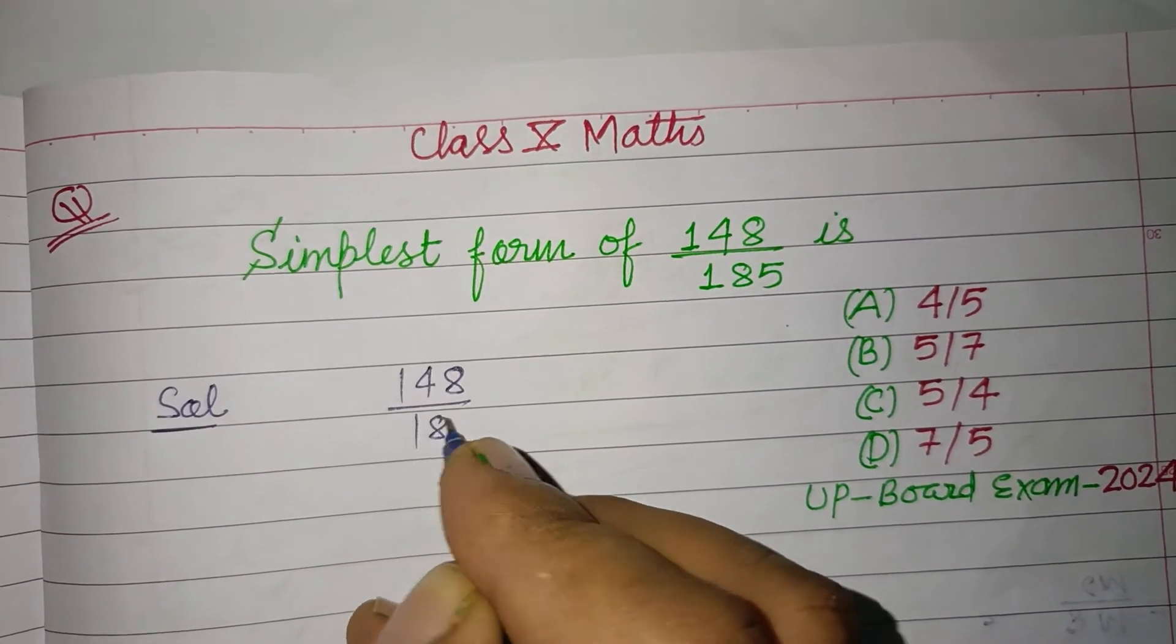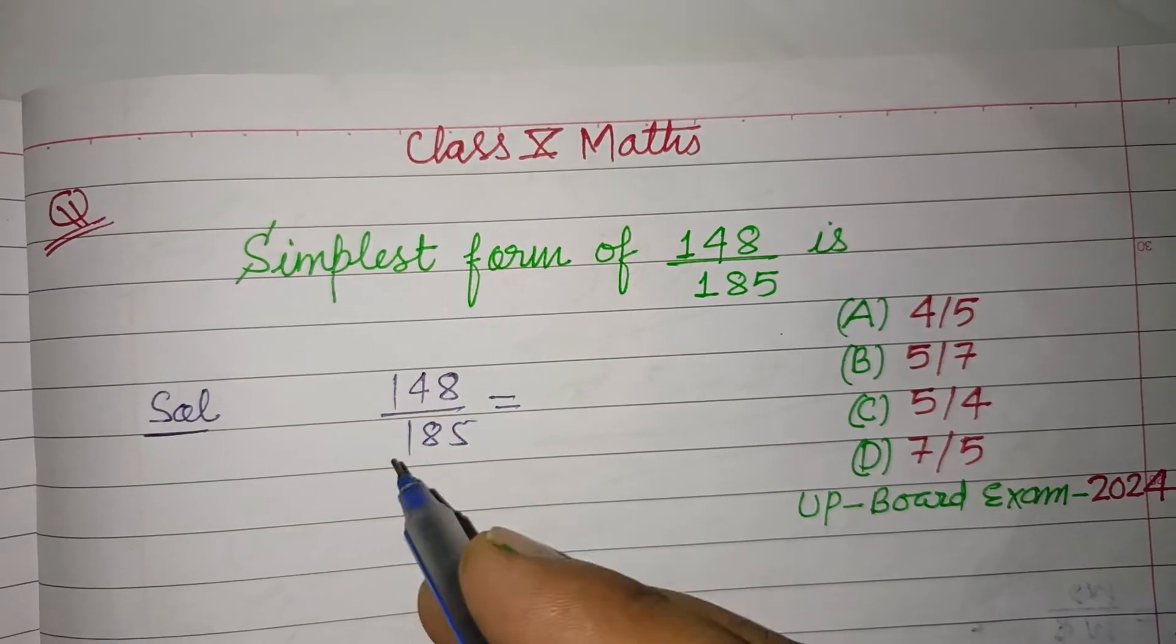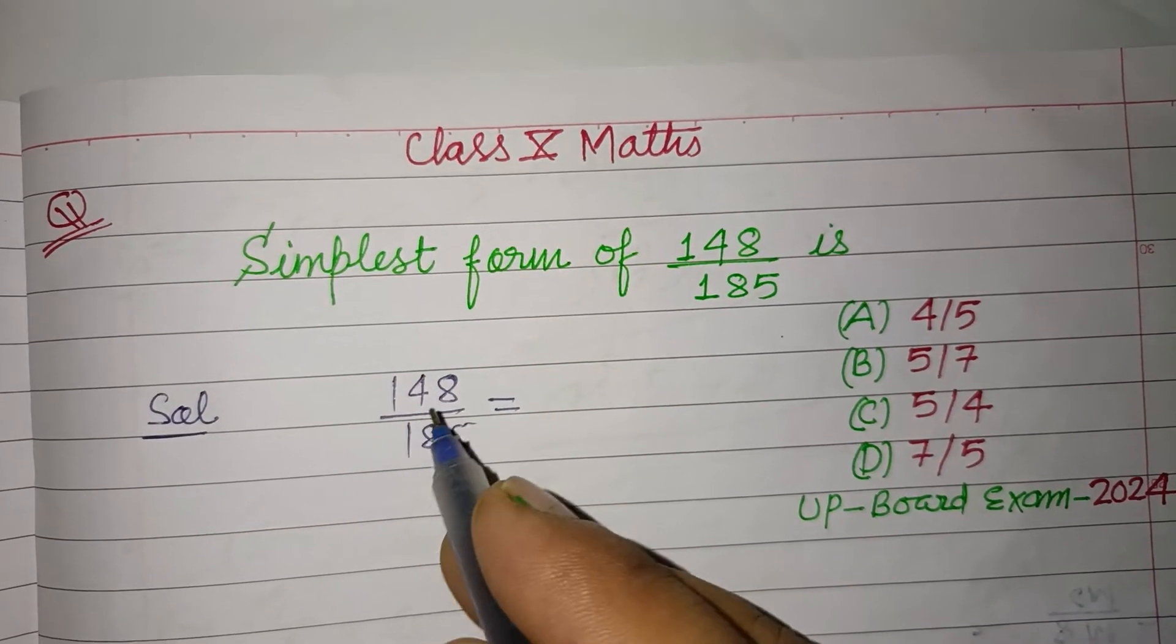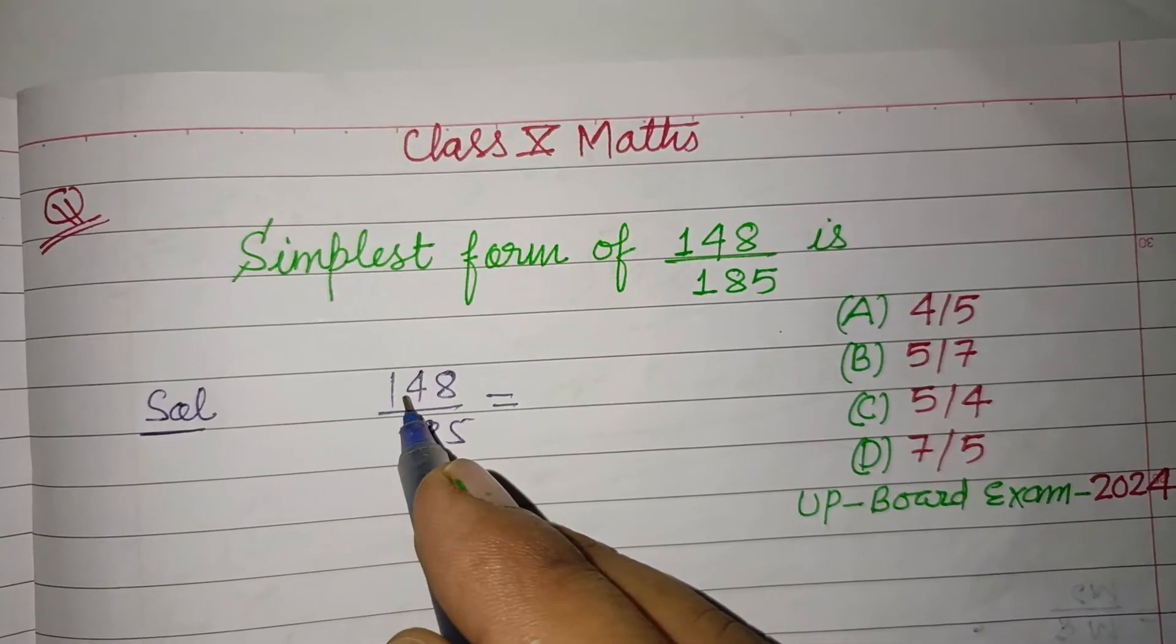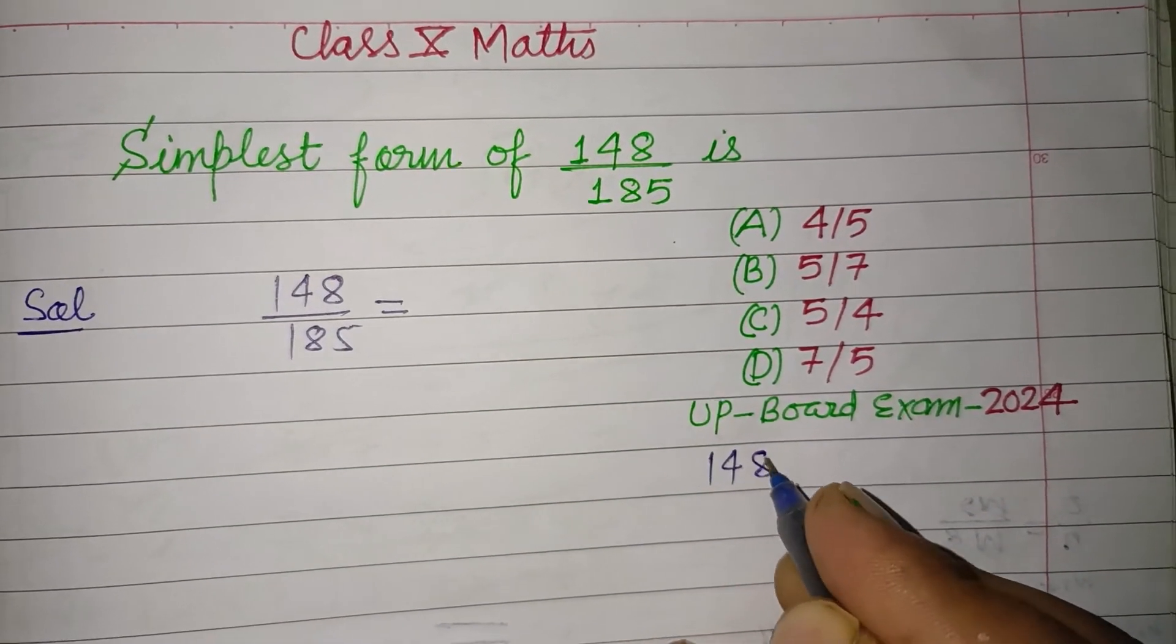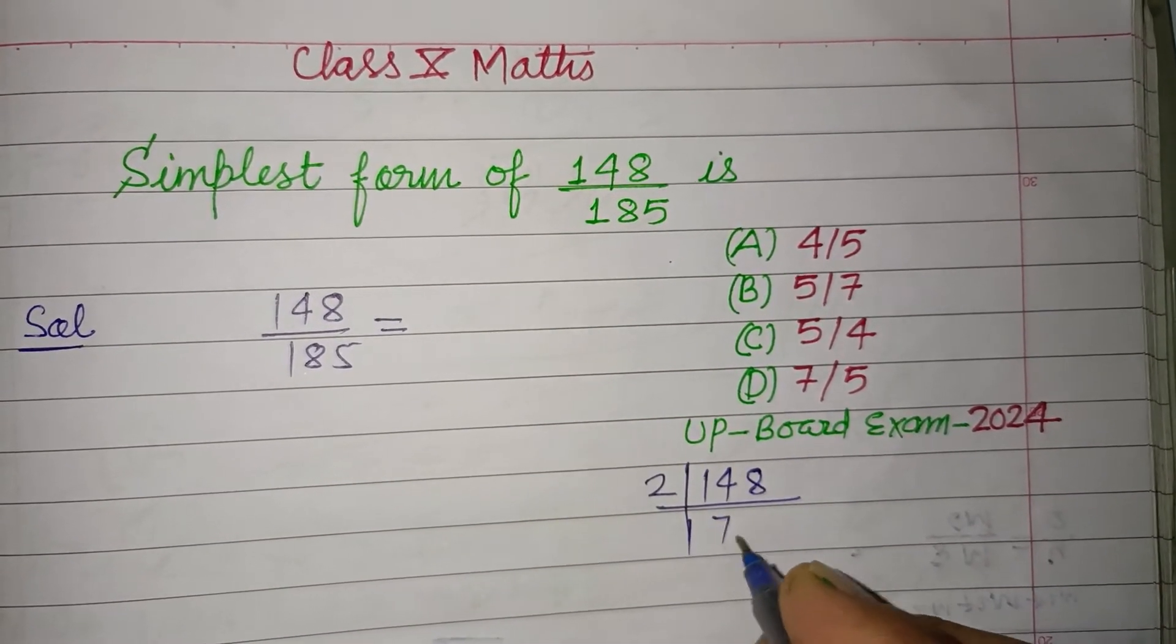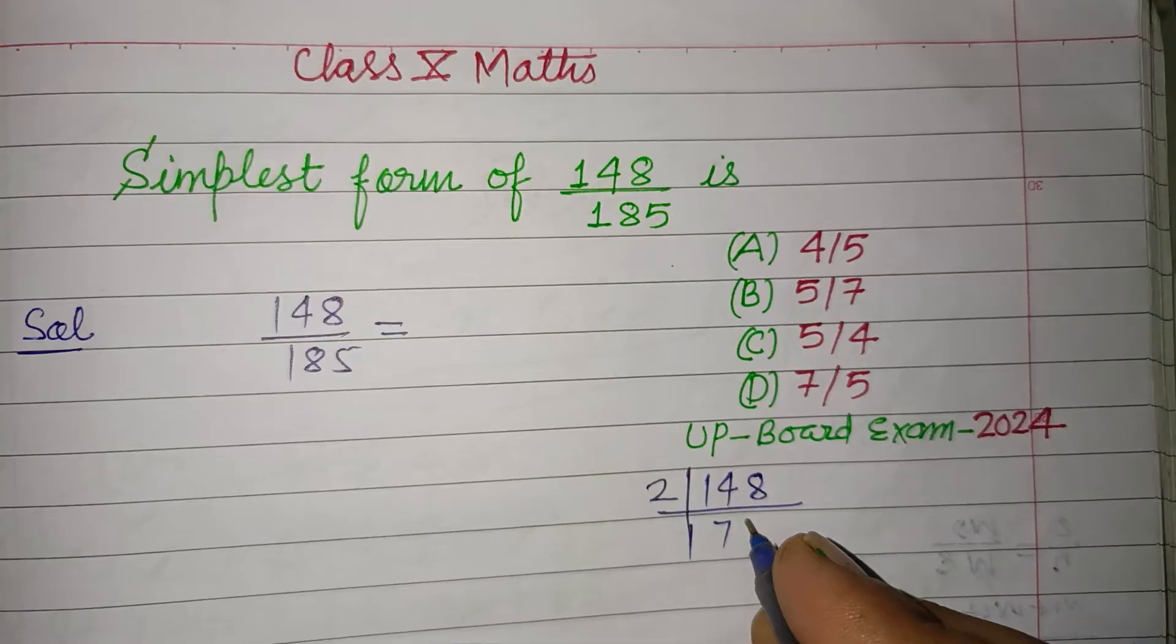148 over 185 can be obtained by introducing its common factors. So first we make the factors of 148. Here we can divide 148 by 2: 2 times 74 equals 148. Then 74 divided by 2 equals 37.